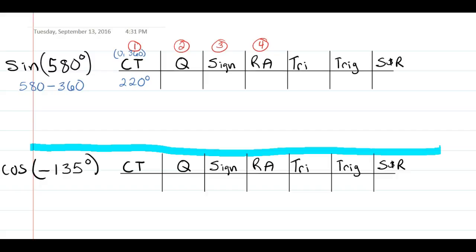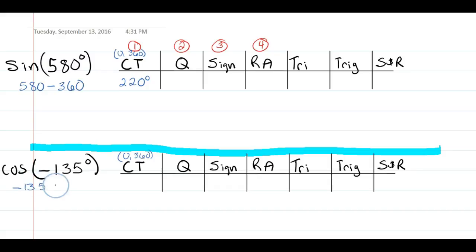For our second example, negative 135° is less than 0, so we add 360°. Negative 135 plus 360 gives us a coterminal angle of 225°.